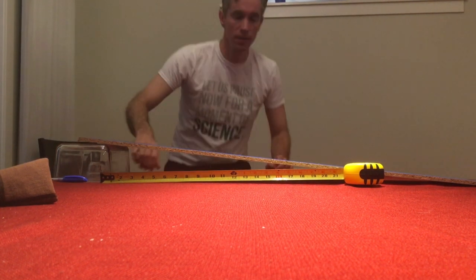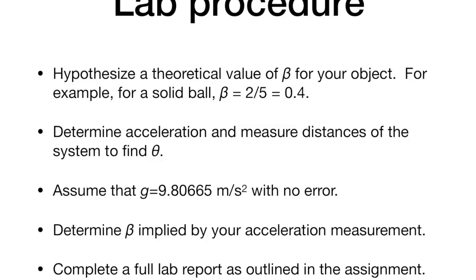Just to cover some final points that you'll want to keep in mind to get started, find your objects and then you should hypothesize a theoretical value of beta for your object. For example, if you find something that's close to a solid ball, go ahead and pick beta equals two-fifths.